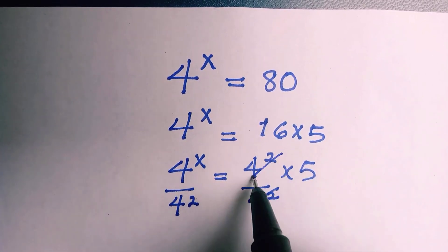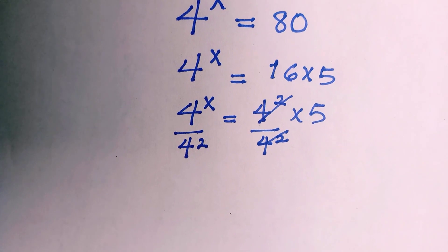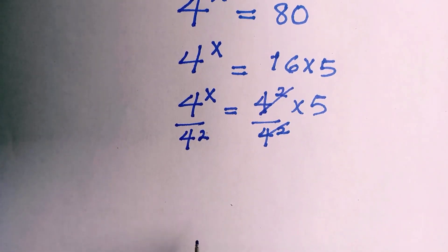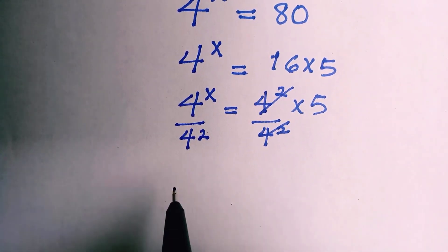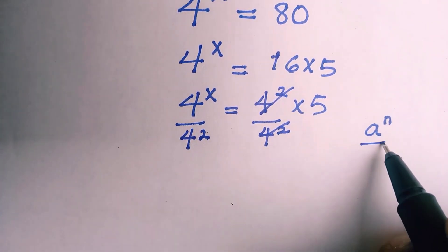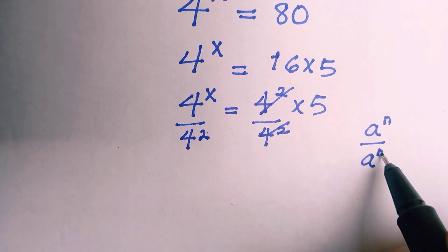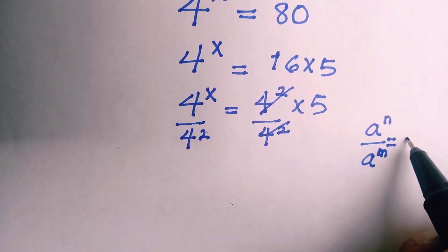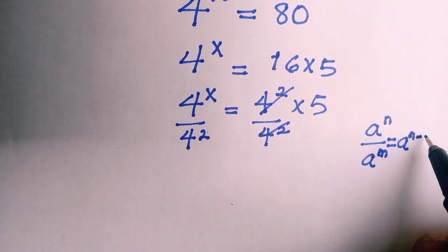If this cancelled, and here from this law of indices which states that if you have a to the power of n divided by a to the power m, it is written as a to the power of n minus m.